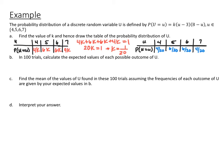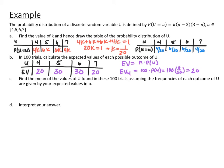In 100 trials, we want to calculate the expected frequency of each outcome. Expected value equals number of trials times probability. So P(4) × 100 = 20, meaning we'd expect 4 to occur 20 times, 5 to occur 30 times, 6 to occur 30 times, and 7 to occur 20 times.